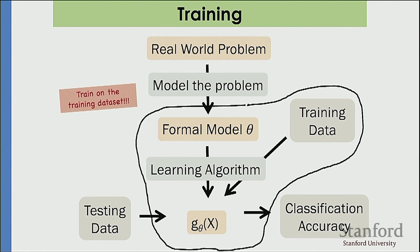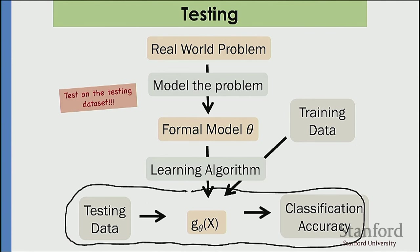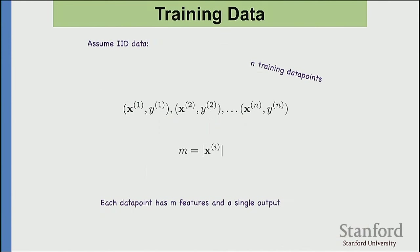The most interesting part of machine learning comes in what we call training. In the first step, you formalize a problem — you take a real world problem, make a model, come up with a formal model that has parameters. The interesting thing is when you take data and use that data to learn the parameters. Once you've done that, it is worth noting that it is beholden upon you to try and estimate how good your algorithm is. So we will reserve some data for testing, and then we can say: we've got an algorithm, it's trained, and this is how accurate we think it is.